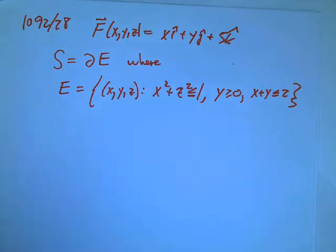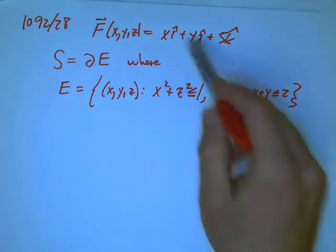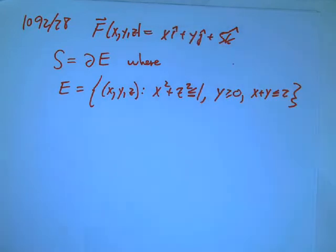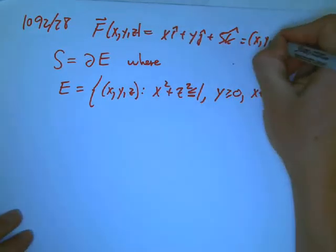Here's one more flux problem. We've got a vector field f, xi plus yj plus 5k, or we could write that as x comma y comma 5, uses a little bit less ink.